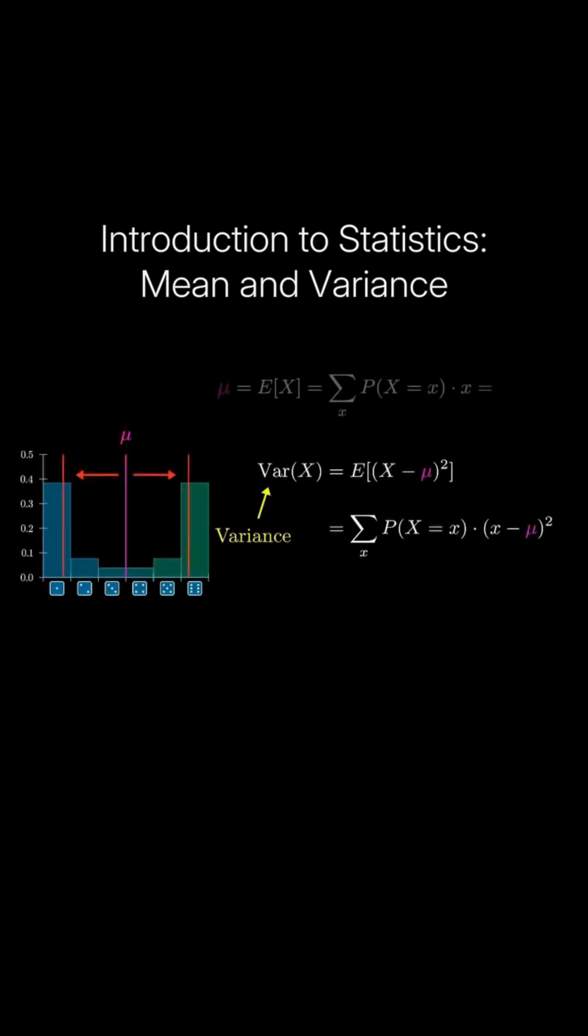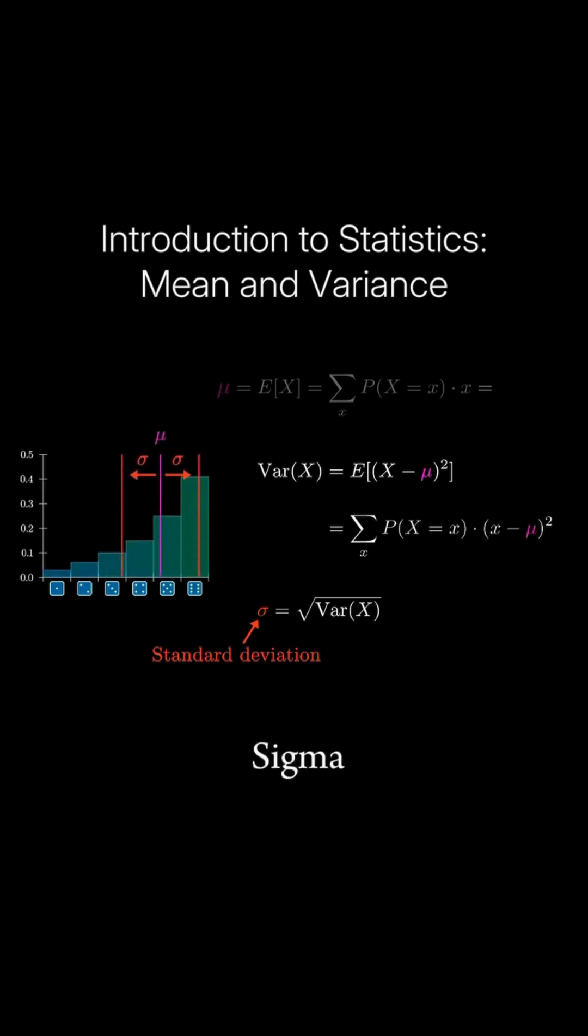Another way to measure spread is what's called the standard deviation, which is the square root of this value. That can be interpreted much more reasonably as a distance on our diagram, and it's commonly denoted with the Greek letter sigma.